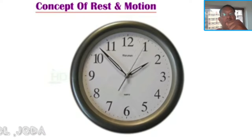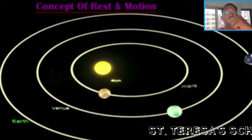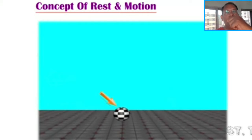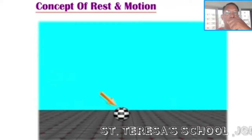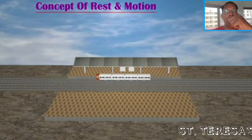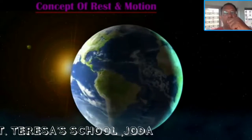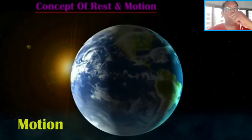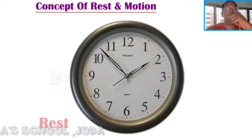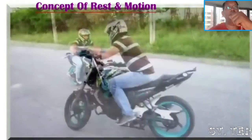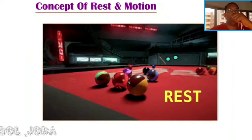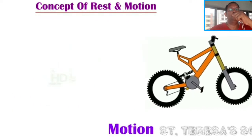Concept of rest and motion in daily life: we come across many objects, some at rest and some in motion. Suppose we consider a ball on the ground — is it at rest or in motion? Yes, we say it is at rest. A moving train — we say it is in motion. A rotating earth about its axis — yes, this is in motion. A clock on a wall — it is at rest. A moving bike — it is in motion.